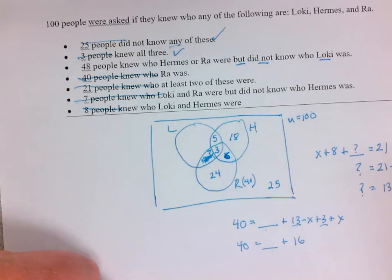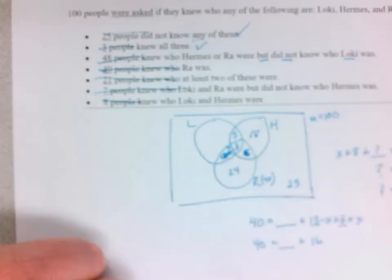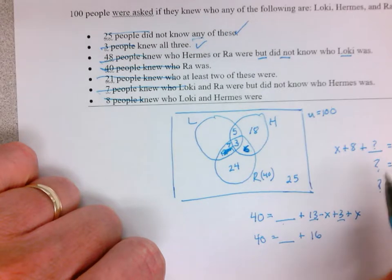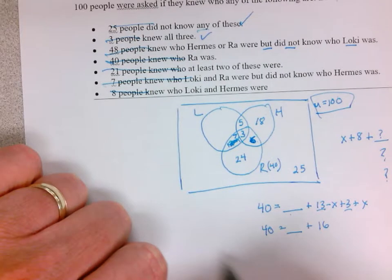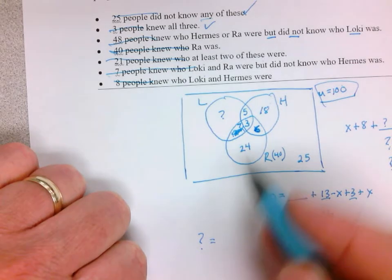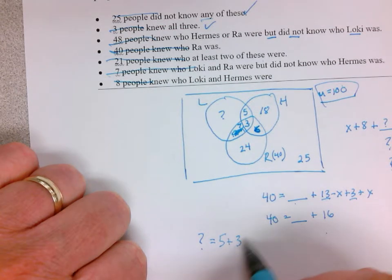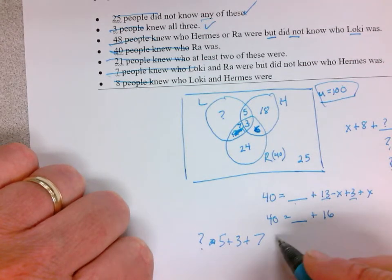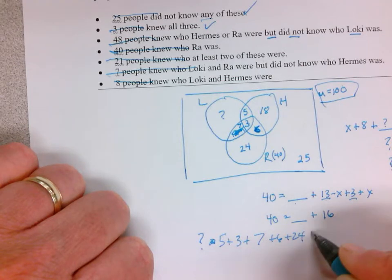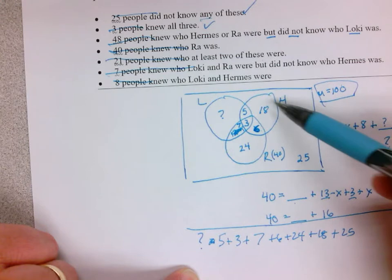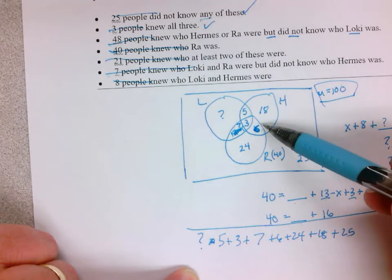In the very last thing, if we're trying to fill in every value in the circle, always go back to our original fact that they add up to 100. So this question mark here equals 5 plus 3 plus 7 plus 6 plus 24 plus 18 plus 25. I'm just adding up basically everything that we have on here. Plus question mark have to add up to 100, and then we can get our question mark.